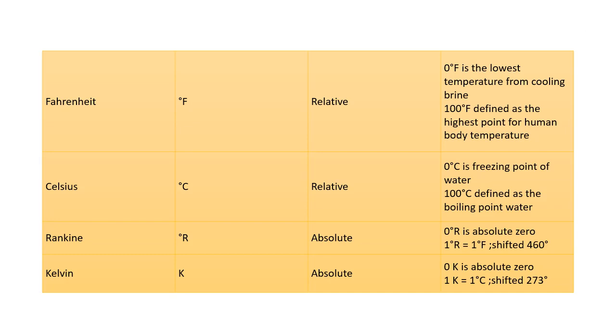This is a chart detailing the relative temperatures and the absolute temperatures. Fahrenheit, the symbol for it is degree F, is relative and is the lowest temperature from the cooling brine. 100 degrees Fahrenheit is defined as the highest point for the human body temperature. Fahrenheit is primarily used in weather calculations and body heat calculations.